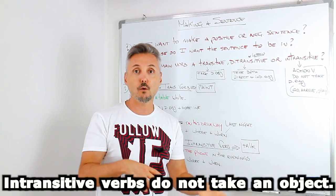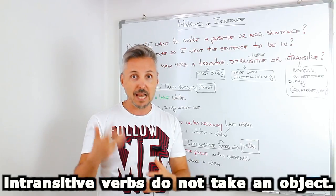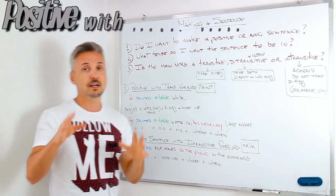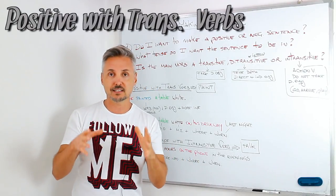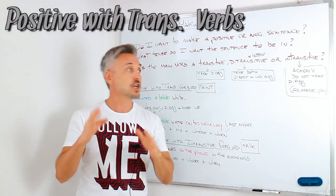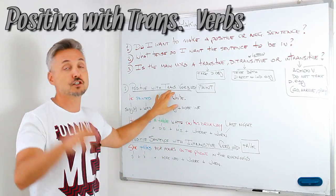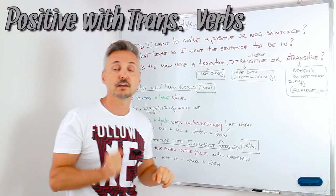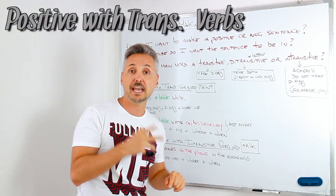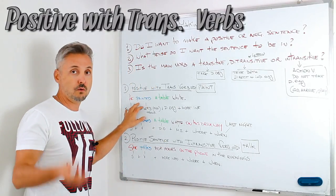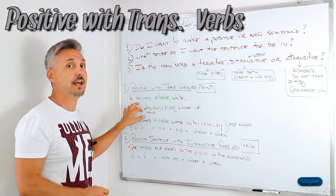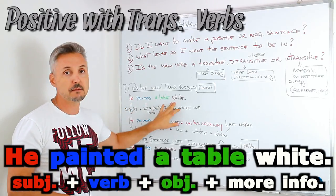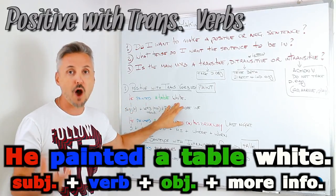For example: go, arrive, play, etc. Let's make a positive sentence using a transitive verb — in this case I chose the verb to paint. So the example is: he painted a table white.